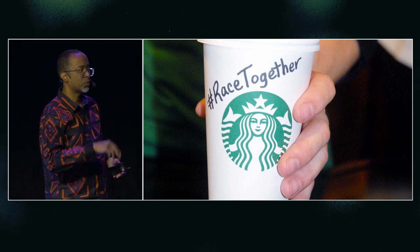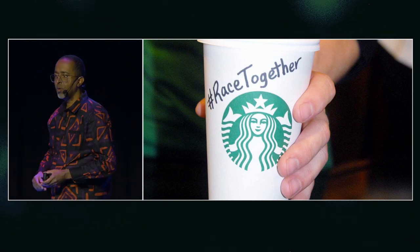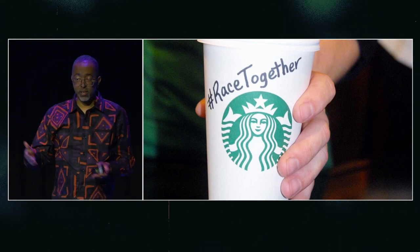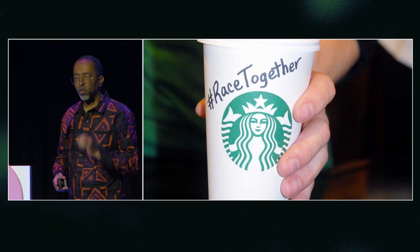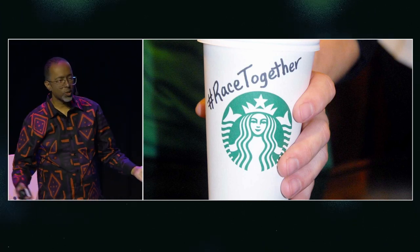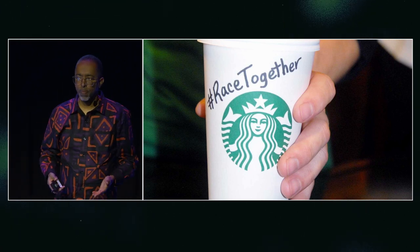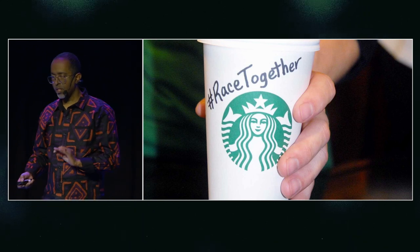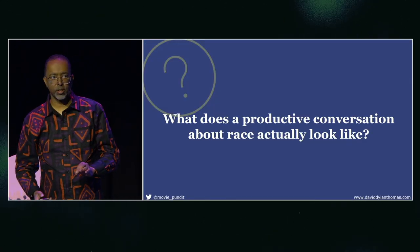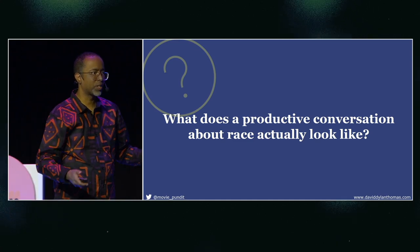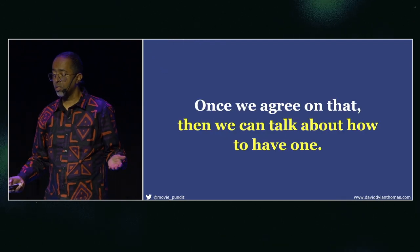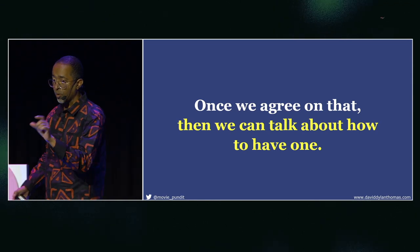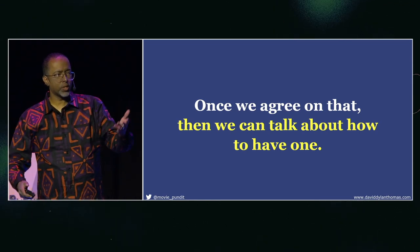A great example came during the Starbucks controversy when they decided to have a conversation with us about race. Your barista would write '#RaceTogether' on your coffee cup and hand it to you — and I have no idea what was supposed to happen, and neither did Starbucks. Twitter lost its mind. This was a very tone-deaf approach. But what didn't happen was any question around what a productive conversation about race actually looks like. Because if we ask that question, we can talk about how to actually have one. Clearly it was not writing 'race' on a coffee cup — but what was it?